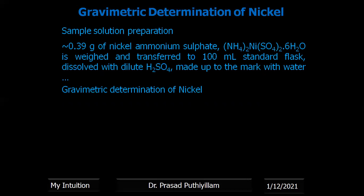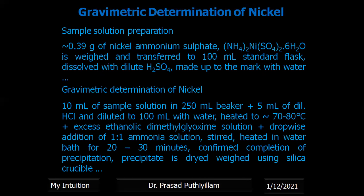For the gravimetric determination of nickel, 10 mL of this sample solution is taken in a 250 mL beaker, then about 5 mL of dilute hydrochloric acid (HCl) is added and diluted to 100 mL with distilled water. It is heated to around 70 to 80 degrees Celsius,